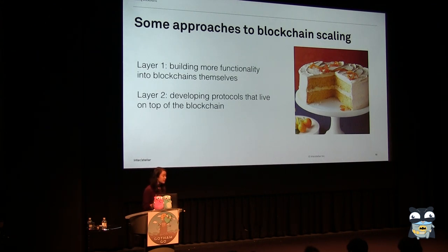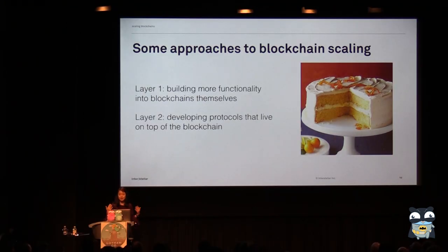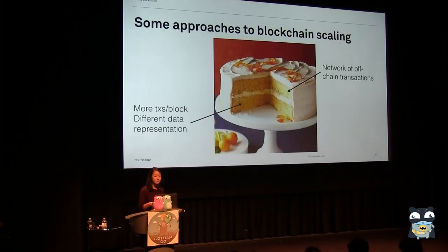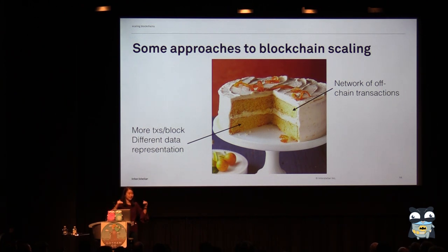And then there's the layer two philosophy, which treats blockchains as a base for you to develop other applications and other ways of representing transactions — developing protocols that live on top of the blockchain. So you can think about layer one as packaging more transactions in each block or changing the way you represent data, and layer two as building networks of private off-chain transactions.